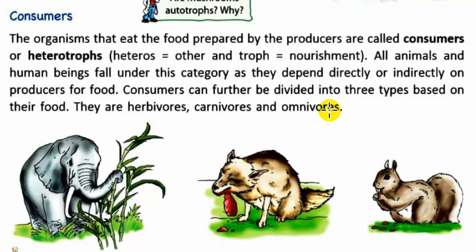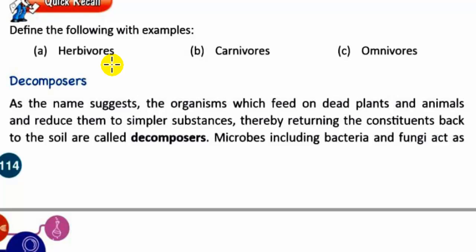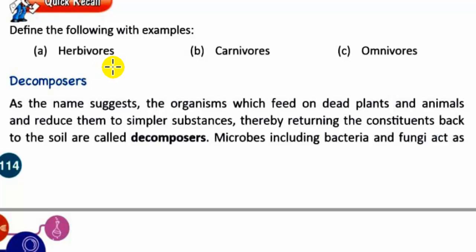Herbivorous animals eat only plants. Carnivorous animals eat flesh or meat — they eat other animals. Omnivorous animals eat both plants and animals. Examples of herbivores are cow and goat. Examples of carnivores are tiger and lion. Examples of omnivores are human beings and bear.